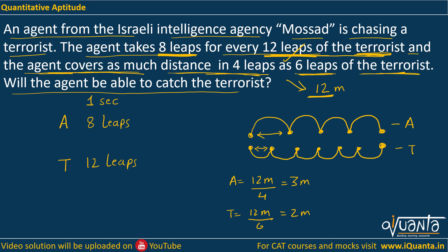So the agent takes 8 leaps in 1 second, and each leap is 3 meters. Total distance covered by the agent in 1 second is 8 × 3 = 24 meters. Similarly for the terrorist, he takes 12 leaps each of 2 meters, so he covers 12 × 2 = 24 meters per second. Both the agent and the terrorist are moving at 24 meters per second.